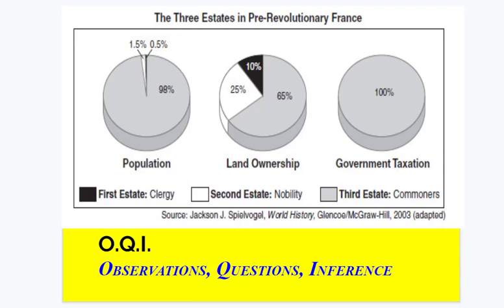Hopefully when you analyze the chart, some things jumped out to your attention. You look at the population, which is 90-something percent, which falls into that third state category, which are the commoners.